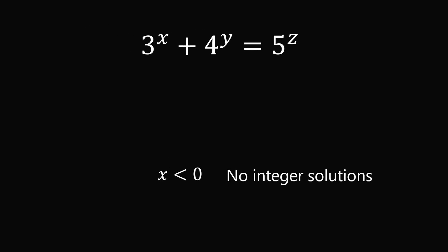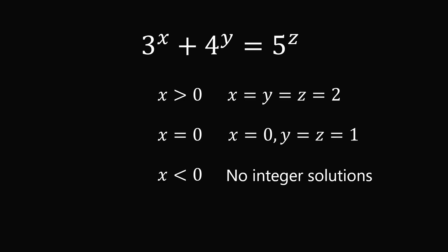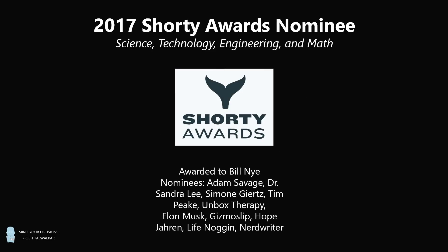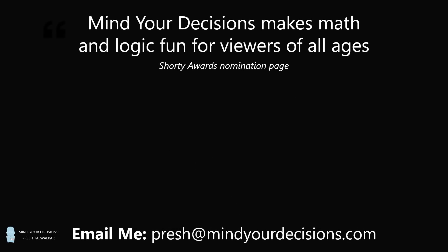Thus we've solved the problem. If x is less than 0, there are no integer solutions. If x is greater than 0, there is exactly one solution: x equals y equals z equals 2. And if x equals 0, there is exactly one solution: x equals 0 and y and z are both equal to 1. So there are exactly two solutions to this equation in integers x, y, and z. Thanks for making us one of the best communities on YouTube. See you next episode of Mind Your Decisions, where we solve the world's problems one video at a time.